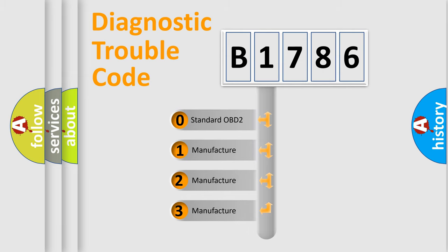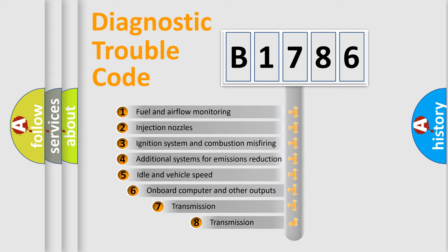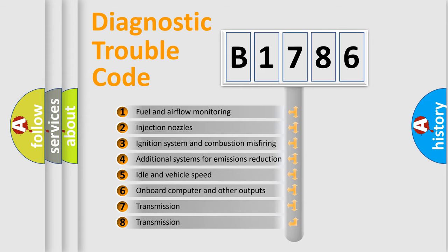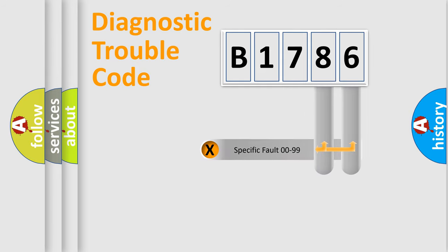If the second character is expressed as zero, it is a standardized error. In the case of numbers 1, 2, or 3, it is a car-specific error. The third character specifies a subset of errors. The distribution shown is valid only for the standardized DTC code.